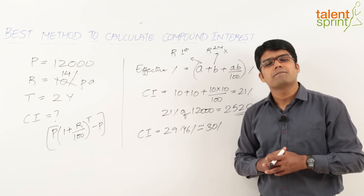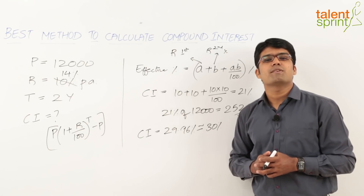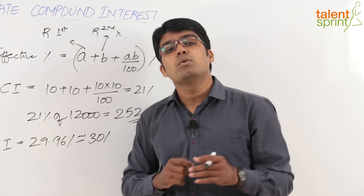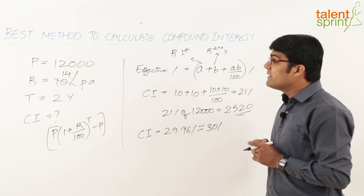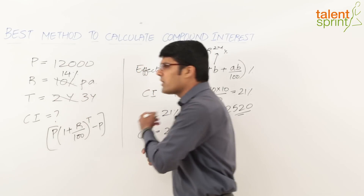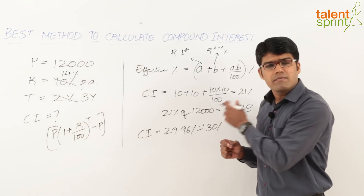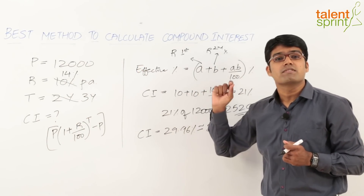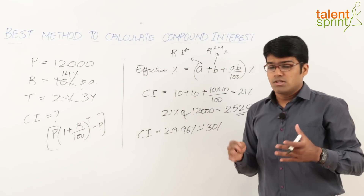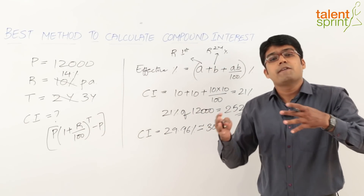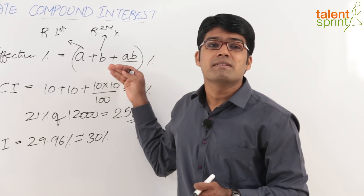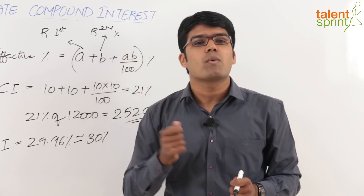Now, how do we handle a time period of 3 years? There is no different formula — the same formula a + b + ab/100 has to be applied twice. Let's understand with an example: time period is 3 years and the rate of interest is 20% per annum.